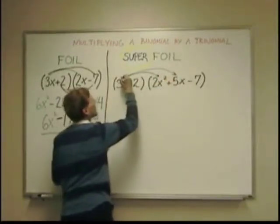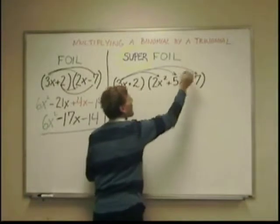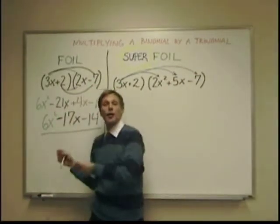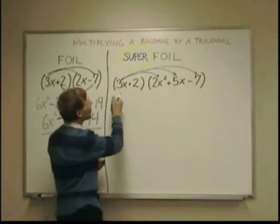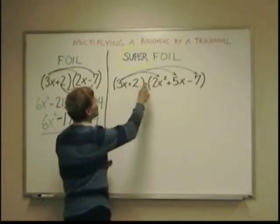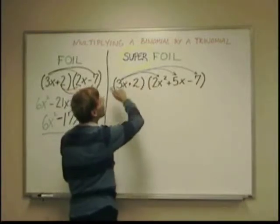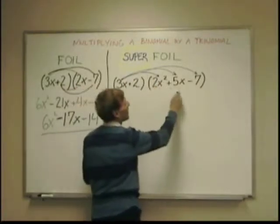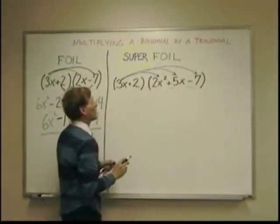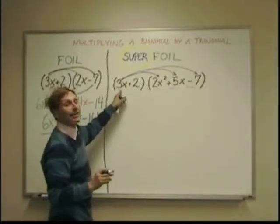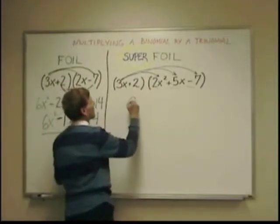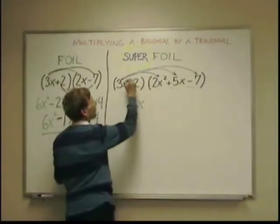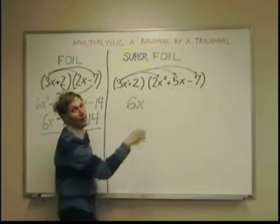So that first number here, it's not exactly first outer inner or last like basic foil. But it is the same concept. And the first number goes to each of the elements in the second part in that trinomial. So I have 3x times 2x squared. And that gives me 6x. Remember, there's a little one there.